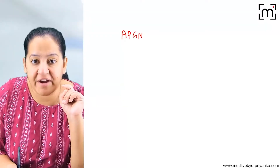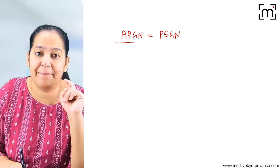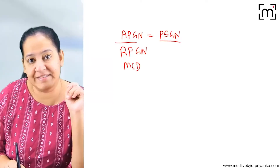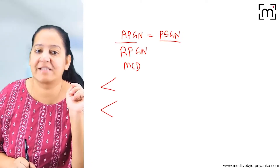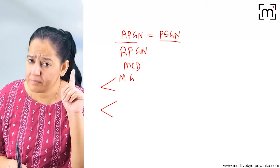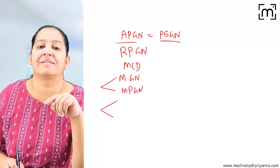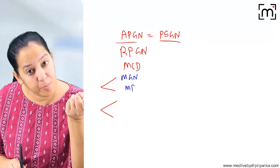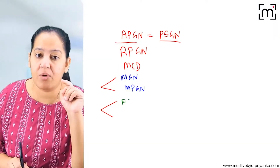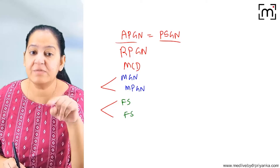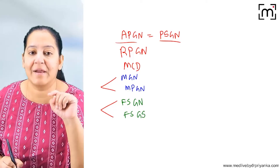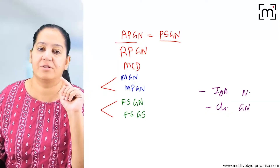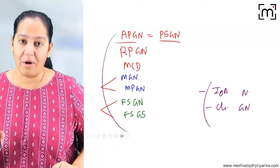The nine types to study are: acute proliferative glomerulonephritis (APGN/PSGN), rapidly progressive glomerulonephritis (RPGN), and minimal change disease (MCD). Then two connected types: membranous glomerulonephritis and membranoproliferative glomerulonephritis. The next two are also connected — focal segmental glomerulonephritis and focal segmental glomerulosclerosis. Finally, IgA nephropathy and chronic glomerulonephritis. Learn all nine in this sequence.